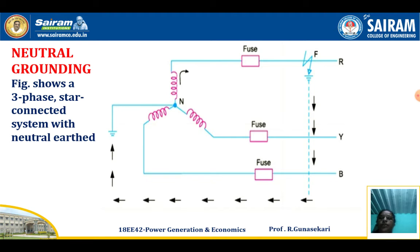Neutral Grounding. Consider a three phase star connected system where the neutral is present and each phase has a fuse. If the fault occurs in the R phase, the fault current flows in the R phase direction, going directly to earth, because the neutral is directly connected to the ground through the earth wire.